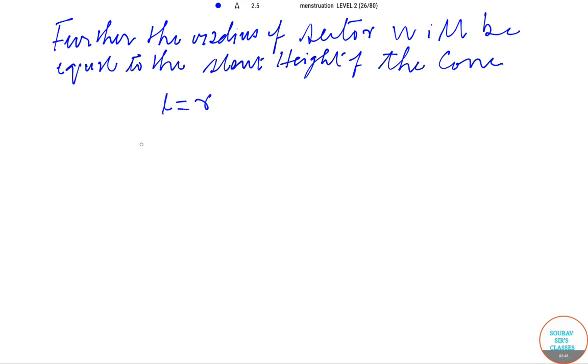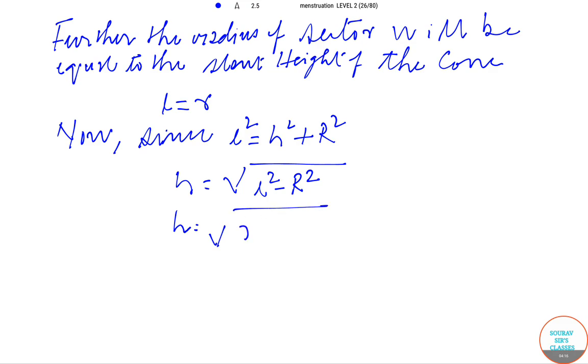Now since l square equals h square plus r square, h is equal to square root of r square minus r by 6 whole square. So h is equal to square root of 35 r by 6. Here is the answer.